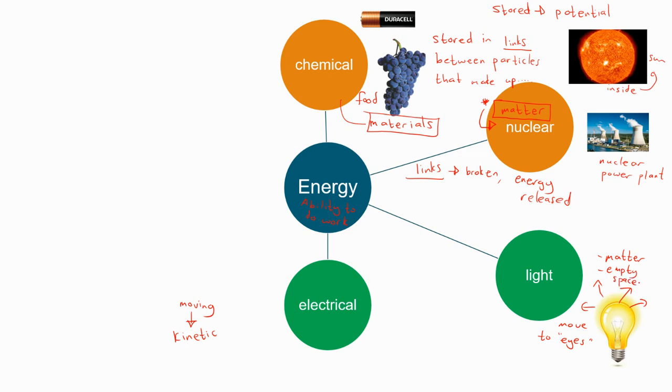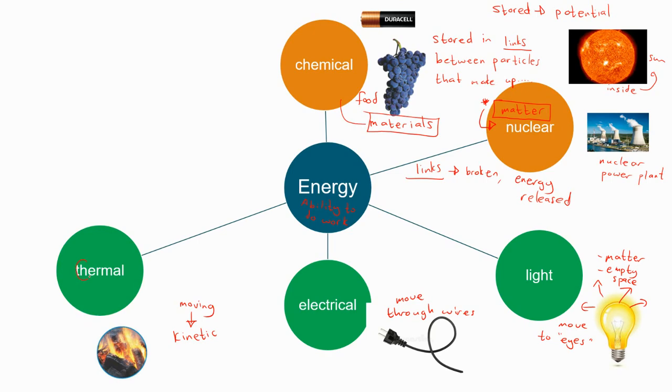Then we get electrical energy. This energy moves through wires. Light and electrical energy we will discuss more in another video. So thermal energy. Thermal for hot. And this energy moves from hot things to cold things. So just remember thermal is hot.